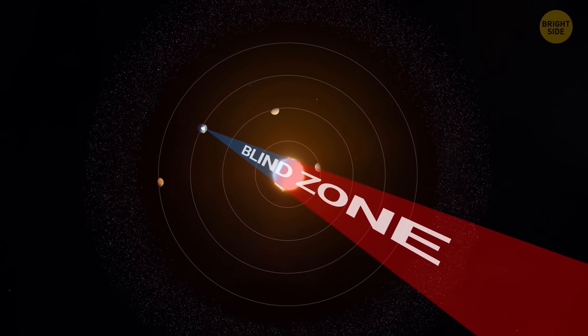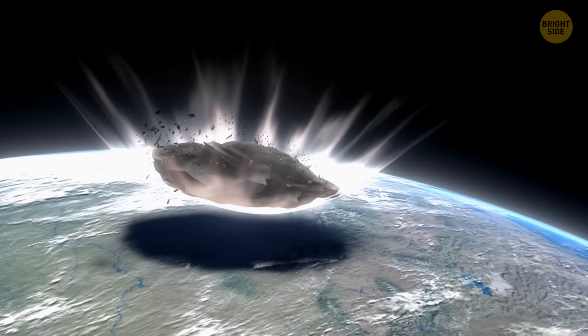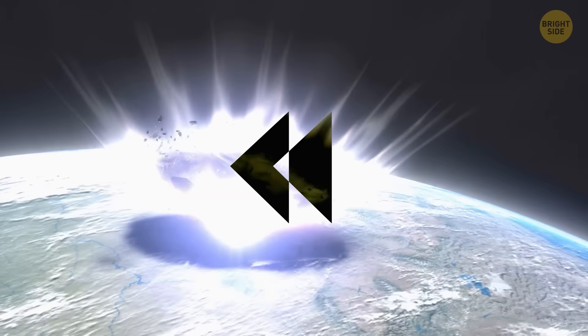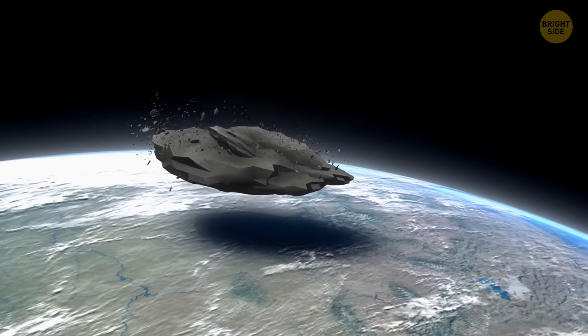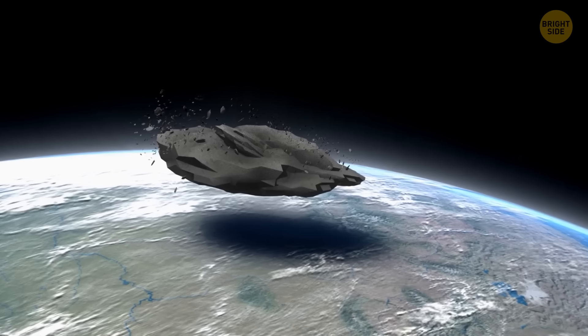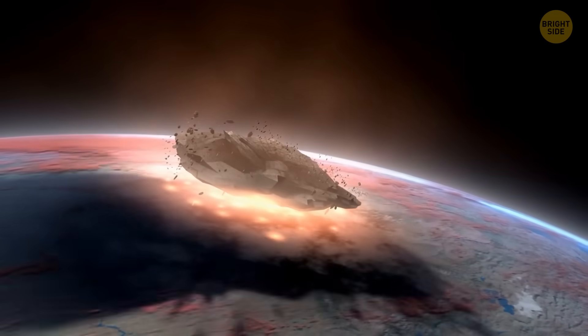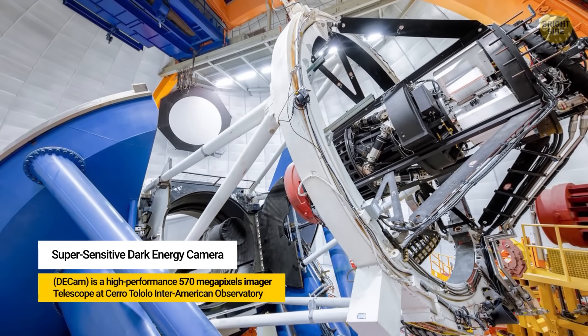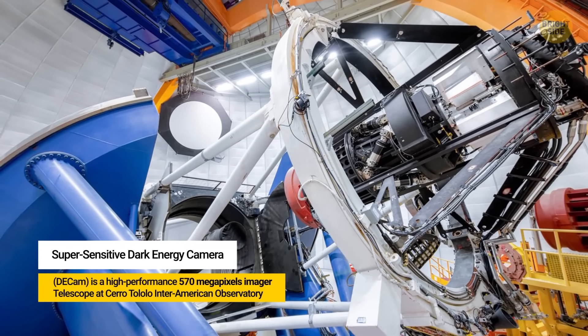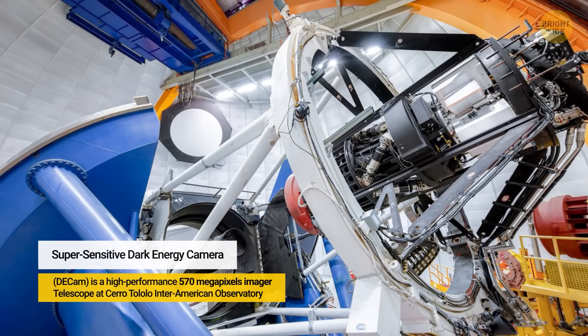Observations have already revealed at least one large asteroid in that region that scientists can seriously consider a planet destroyer. It's called 2022 AP7, and it's huge. This thing is more than half a mile wide, big enough that if it ever hit Earth, it would be a catastrophic day for everyone. Astronomers found it by using the super-sensitive dark energy camera during twilight, pointing the telescope at the region of the sky most surveys normally avoid.